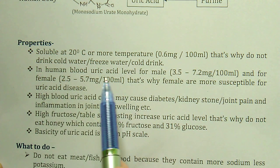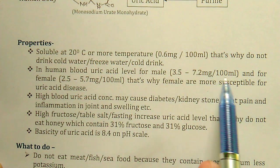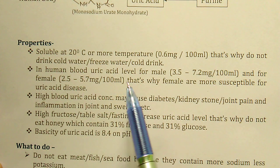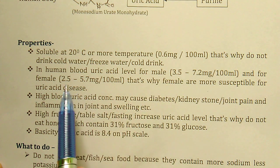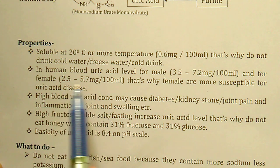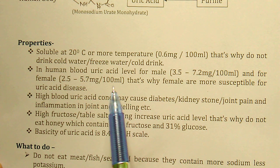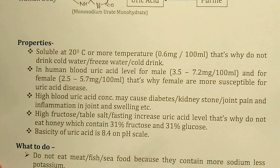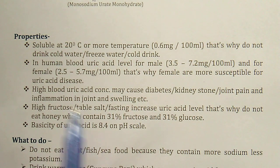In human blood, the uric acid level for males is 3.5 to 7.2 milligram per 100 ml, and for females it is 2.5 to 5.7 milligram per 100 ml. Females are more susceptible to uric acid because their normal concentration is very low — 2.5 to 5.7 — yet they eat the same food as males, so more precaution is needed to reduce the effect of uric acid in the female body.